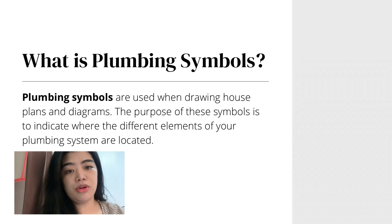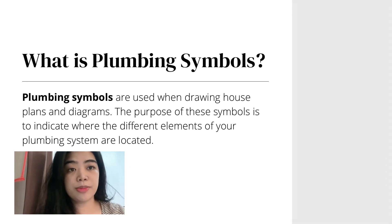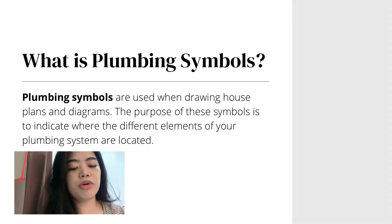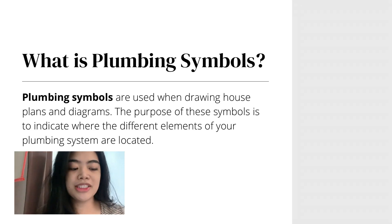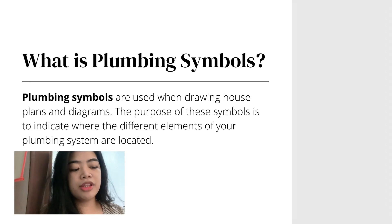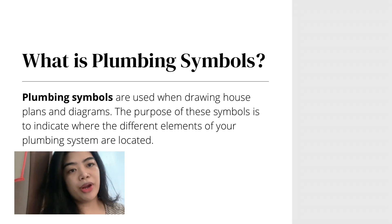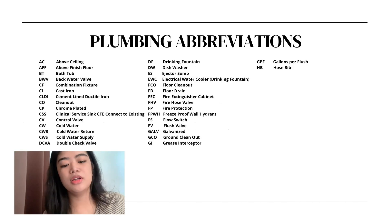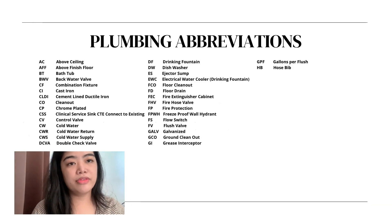Plumbing symbols. Plumbing symbols are used when drawing house plans and diagrams. The purpose of these symbols is to indicate where the different elements of your plumbing system are located. Some of these symbols are self-explanatory, but others might be difficult to interpret. The following are the plumbing abbreviations.